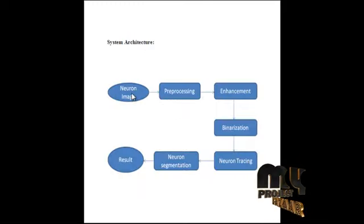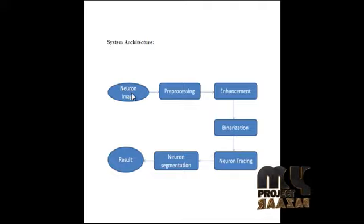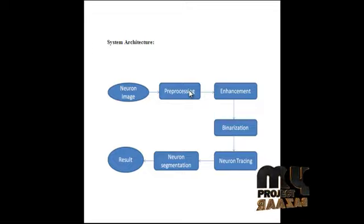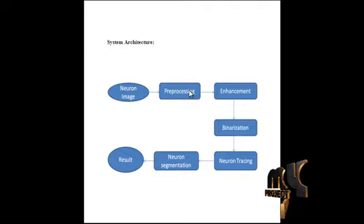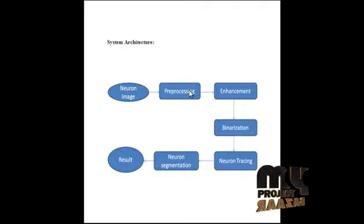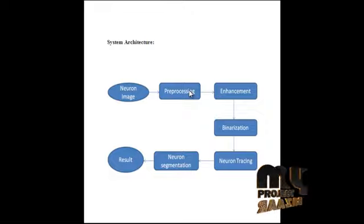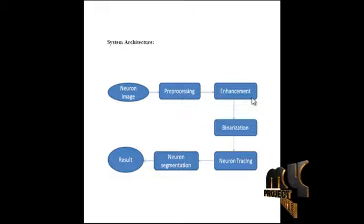Now let's see the flow of our project. A neural image is provided as input and passed to the pre-processing stage. Here we apply a Gaussian filter to the input image. Gaussian filter is often used to remove noise from the image — it is a windowed linear filter. The noise-free image is then passed to the enhancement stage.